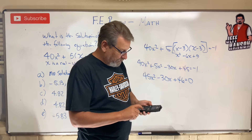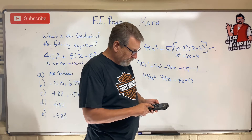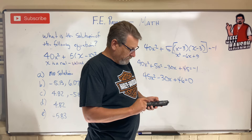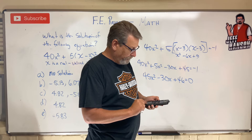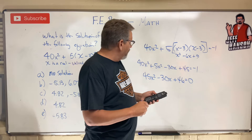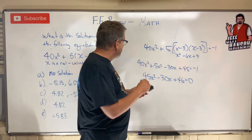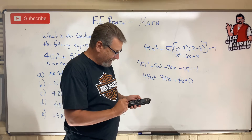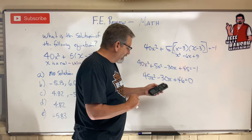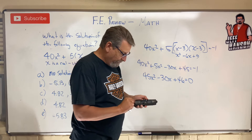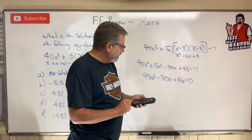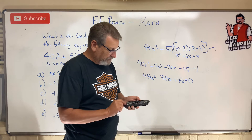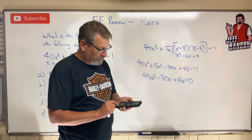I'll go to poly solve. Clear, clear. A is going to be 45 — enter. B is going to be minus 30 — enter. C is going to be 46 — enter.